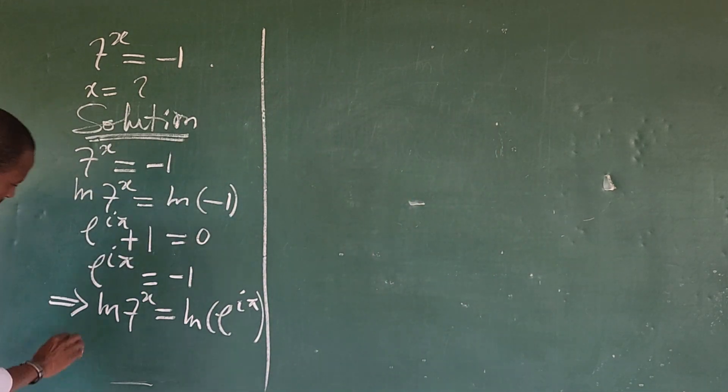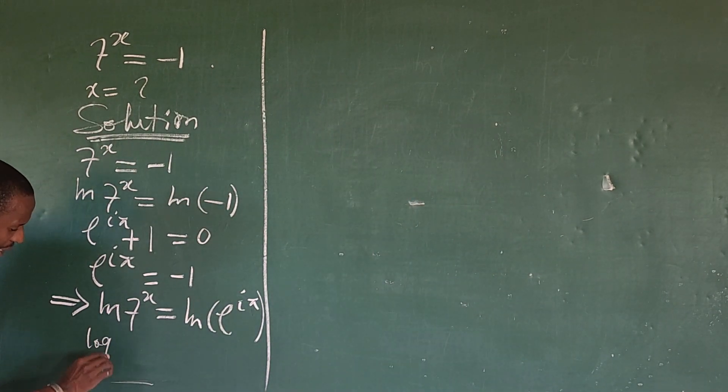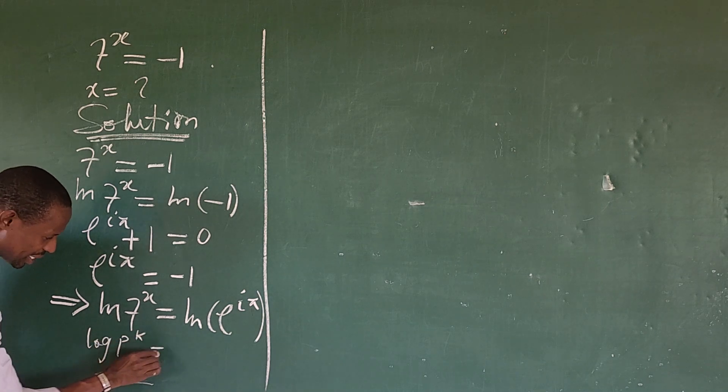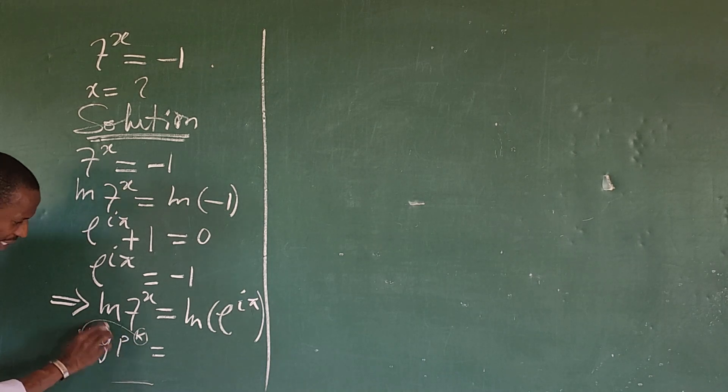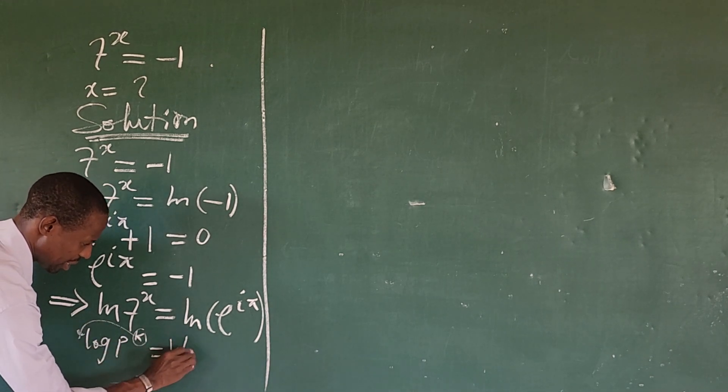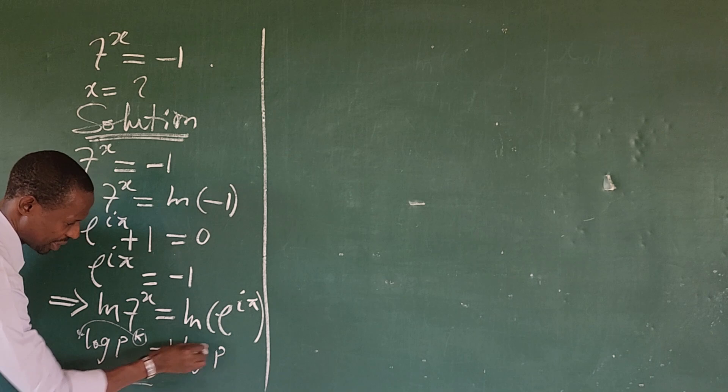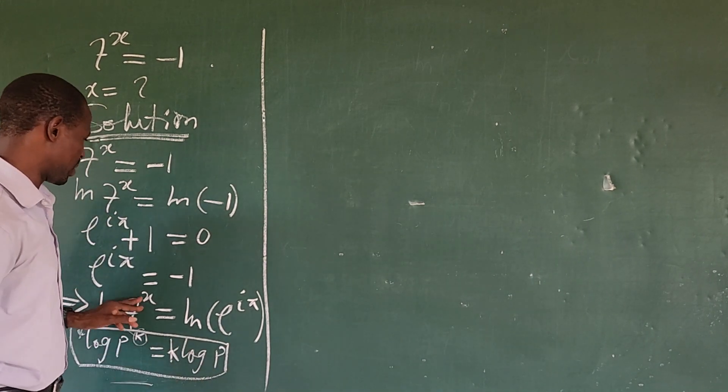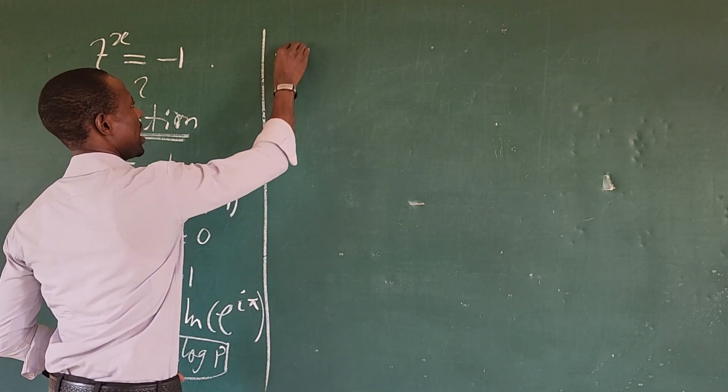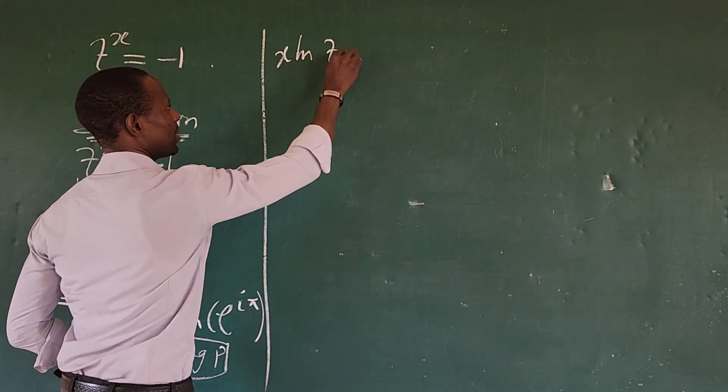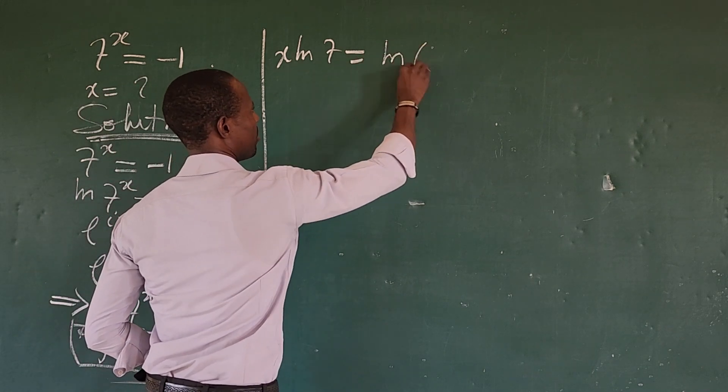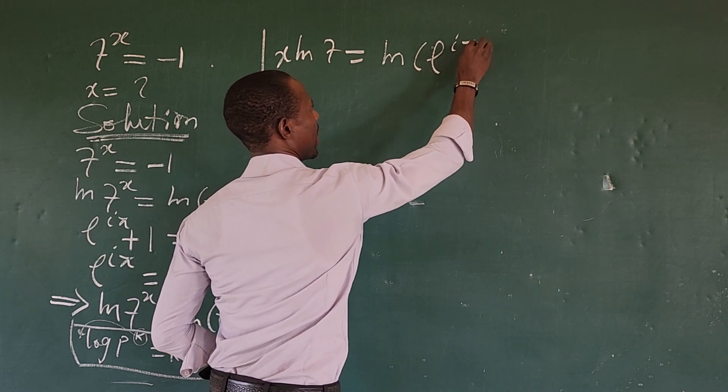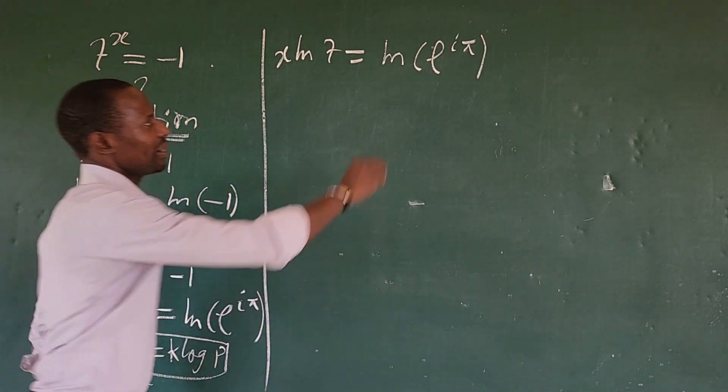We say that if you have your log, let's say, p to the power of k, this is equal to, if you move this back, this will give us k log p. So if we apply this rule again, we can apply this to this. So x ln of 7 is equal to the ln of E to the power of iota pi.